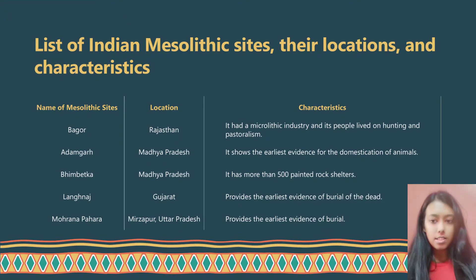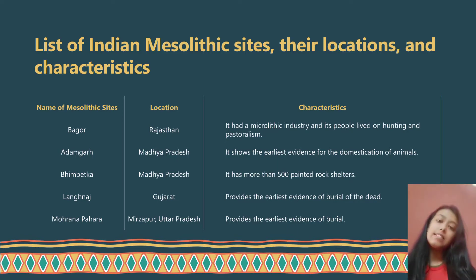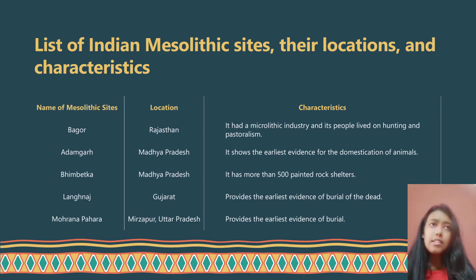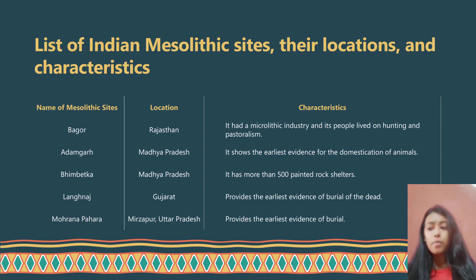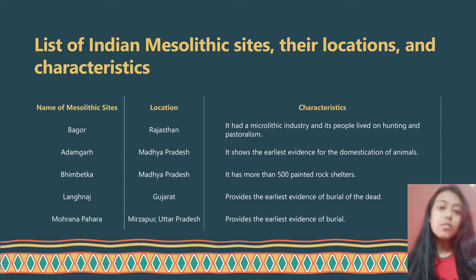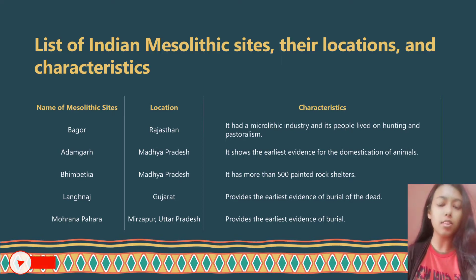Mesolithic communities spread out into new ecological niches and the evidence of rock art provided notable information about their lives and aesthetic sensibilities. Mesolithic people obtained their food through hunting and gathering. Animal bones found at some Mesolithic sites indicate that the beginnings of animal domestication can be traced from this phase, with different animals being domesticated during the Mesolithic age.